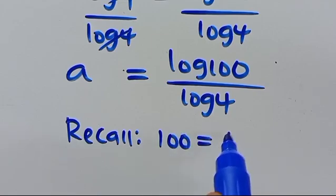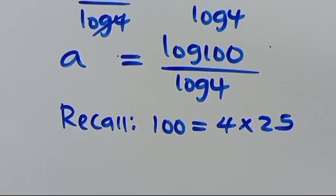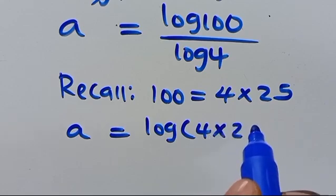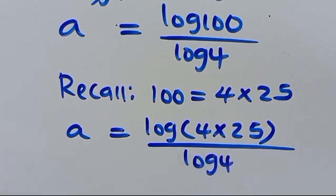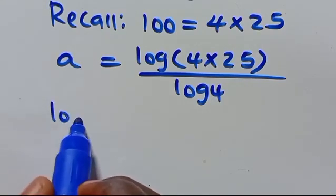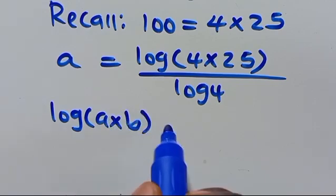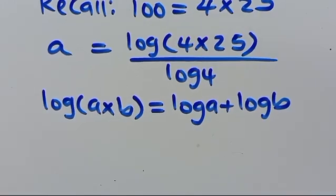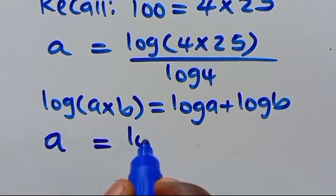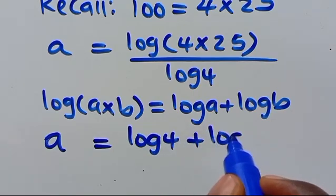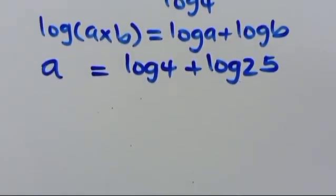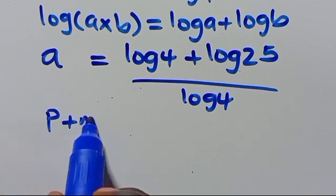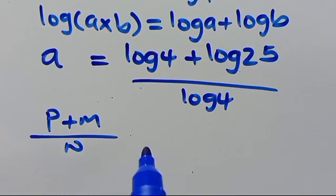We can write 100 as the product of 4 times 25, so we have a equals log of 4 times 25 over log 4. Applying the rule that log of a times b equals log a plus log b, we get a equals log 4 plus log 25 over log 4.